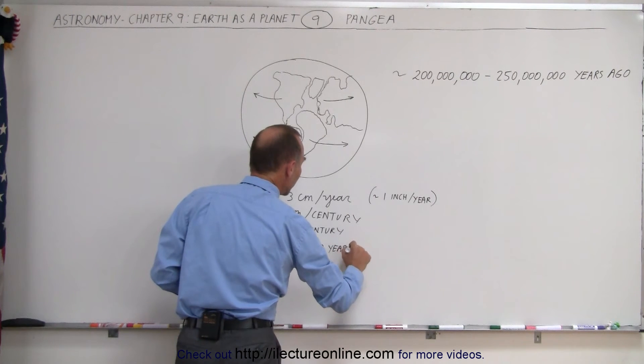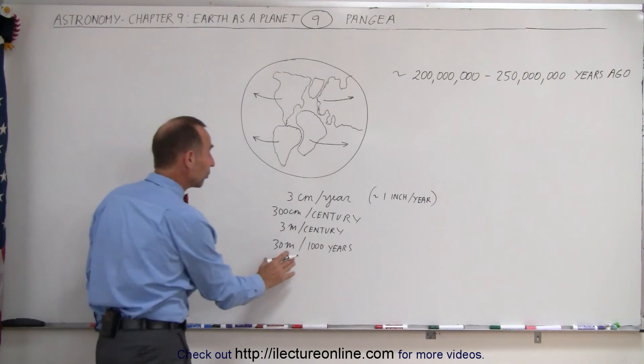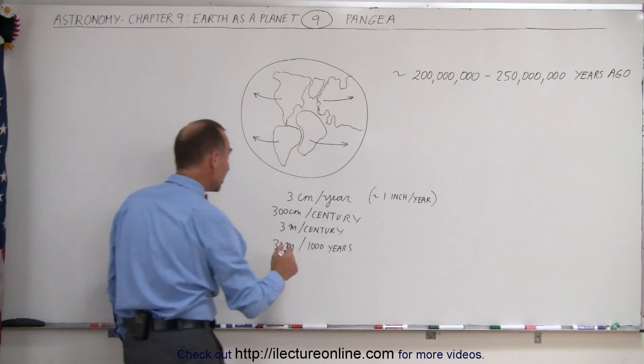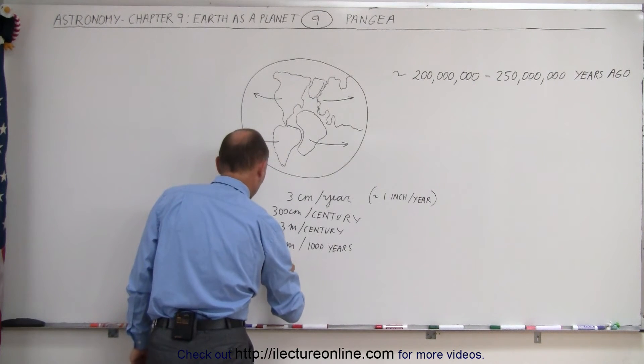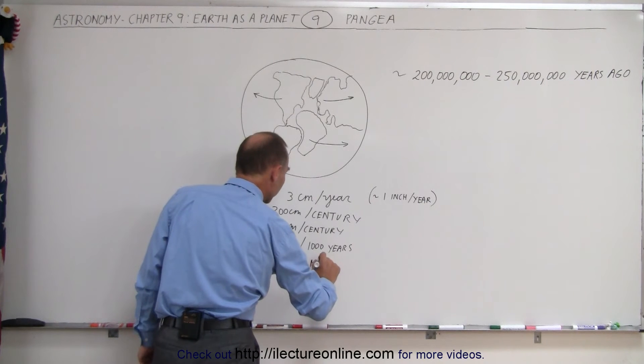Now, what if we go to a million years? How far would they separate from one another? Well, 30 meters times a thousand would be 30 kilometers. So that means in a million years, we would have a separation of 30 kilometers per one million years.